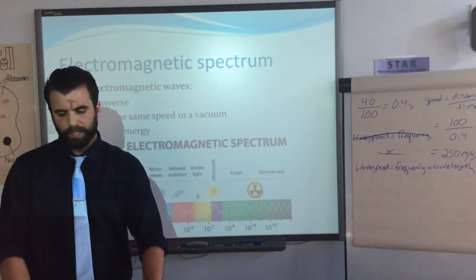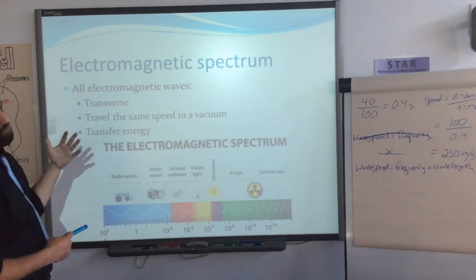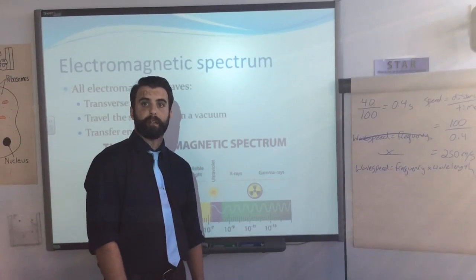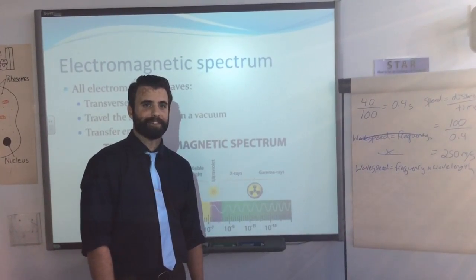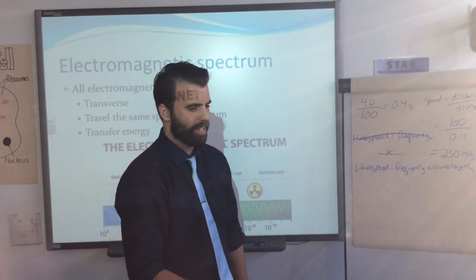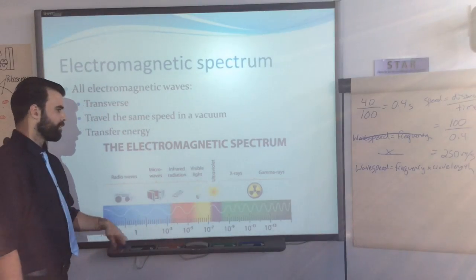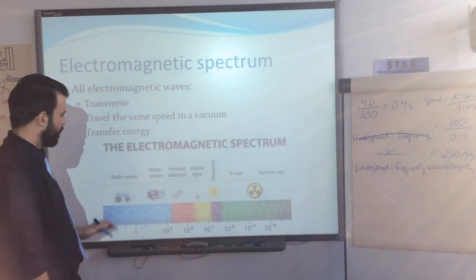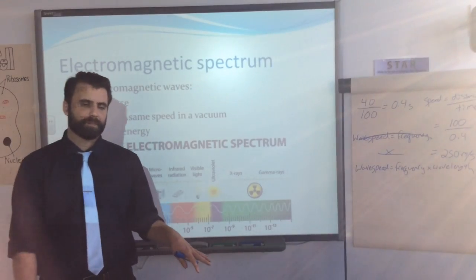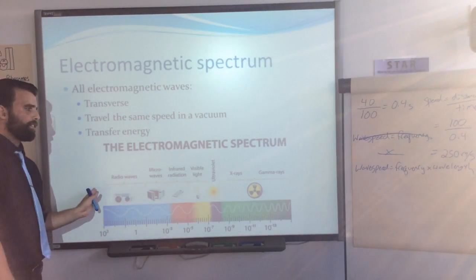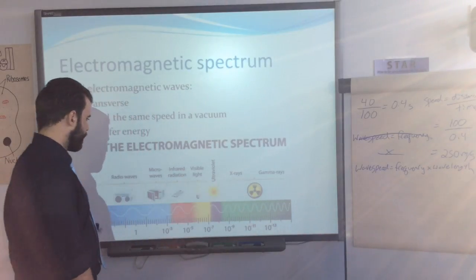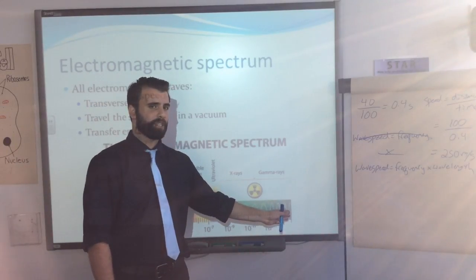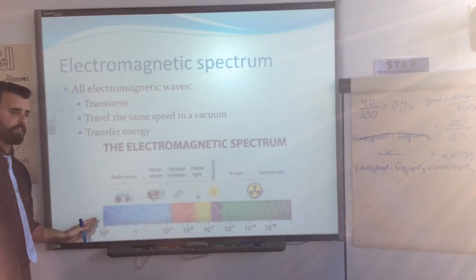For the electromagnetic spectrum, you need to know the order. Radio waves have the largest wavelength and the smallest frequency. Going across the spectrum toward gamma rays, wavelength decreases and frequency increases. Gamma rays have the highest frequency and the smallest wavelength. You might be asked to fill in gaps in the spectrum order.